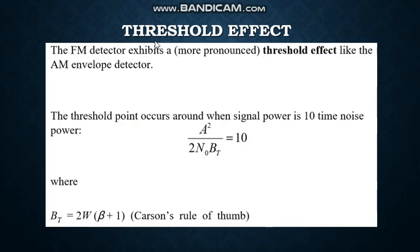First, we start with Threshold Effect. The FM detector exhibits a threshold effect like the AM envelope detector. The threshold point occurs around when signal power is 10 times the noise power: A² / (2N₀BT) ≈ 10, where bandwidth BT = 2W(β + 1). This bandwidth is given by Carson's rule.